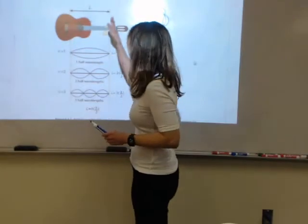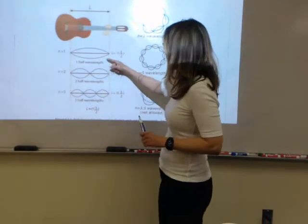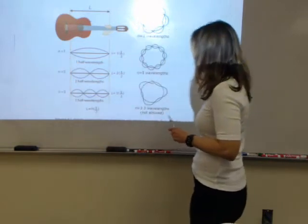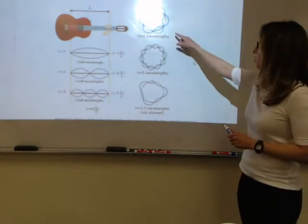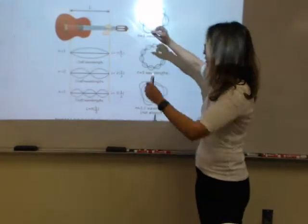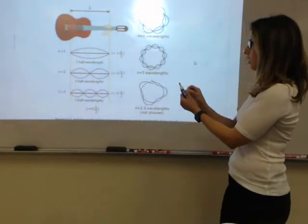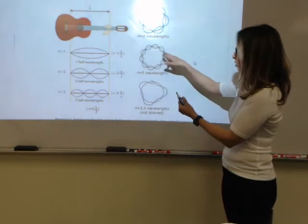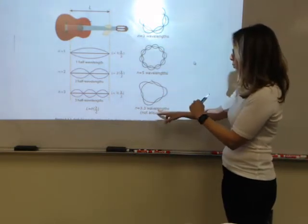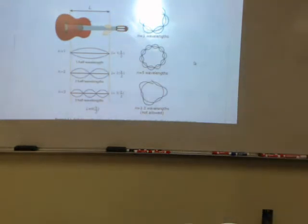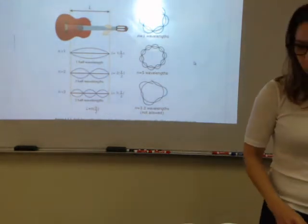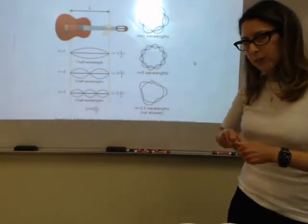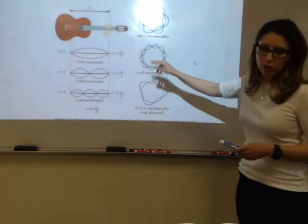So here is your guitar string of length L, and if you pluck it, you are going to end up having these whole number wavelengths. And you'll see how they fit perfectly if I take that guitar string and I put it into a circle. You'll see that the whole number wavelengths fit fine within that length L, but if I have a fractional number of wavelengths, they do not.